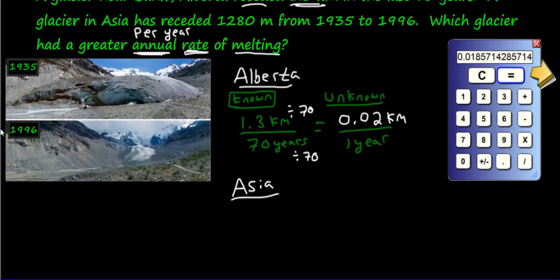Let's look at the one in Asia. In Asia, it's receded 1,280 meters. Now wait, hold on a second. Meters, the one in Alberta was receding in kilometers. We can't compare meters and kilometers. We have to turn them into the same thing. So how do we convert meters to kilometers? We have to do that first. You divide by 1,000.